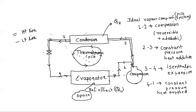The condenser is maintained at high pressure and the evaporator at low pressure because of the compressor and the expansion devices. These two components perform a very important role: to maintain the system under two pressure levels.